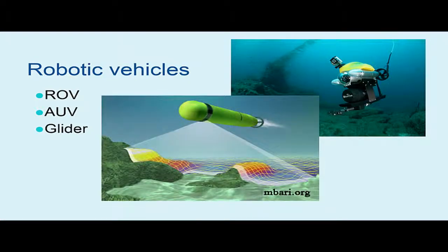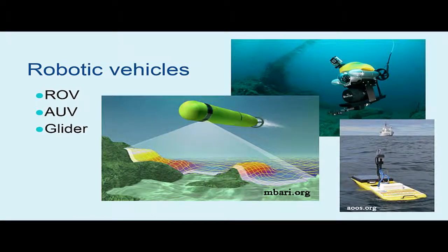Autonomous underwater vehicles are programmed to follow a predetermined route underwater or execute an algorithm that navigates following a set of rules. AUVs are programmable robotic vehicles that, depending on their design, can drift, drive, or glide through the ocean without real-time control by human operators. Some AUVs communicate with operators periodically or continuously through satellite signals or underwater acoustic beacons that permit some level of control. A glider is a type of AUV that operates on the surface.